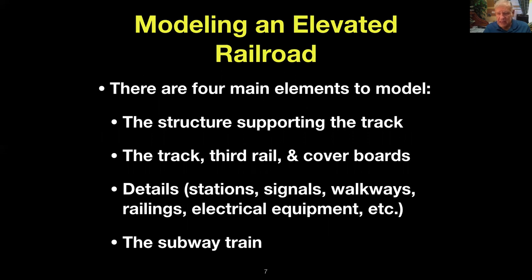When you model this, I broke it down into four elements. One is the structure that supports the track. The second is the track itself, the third rail, and the cover boards that cover the third rail. Third are the details you have to add to make it a realistic scene — the stations, the signals, the walkways, railings, electrical equipment. And then last but not least, is the subway train itself.